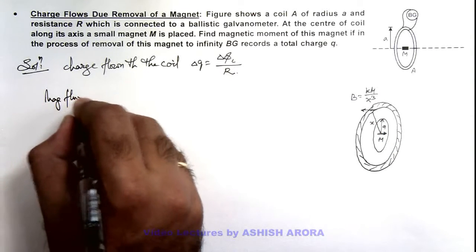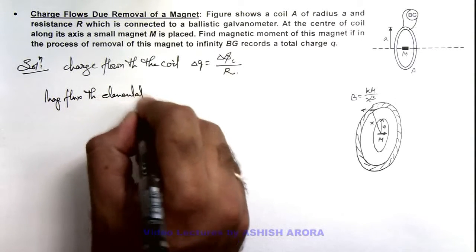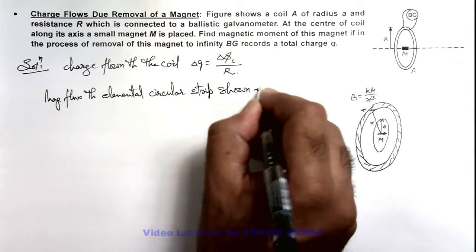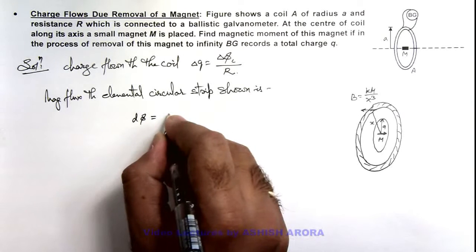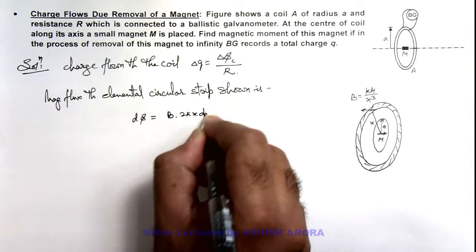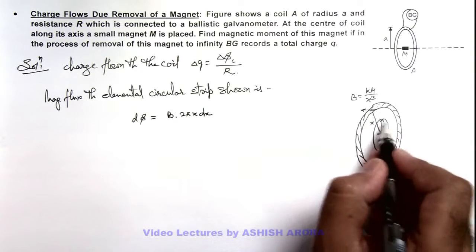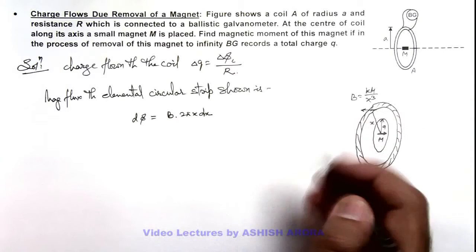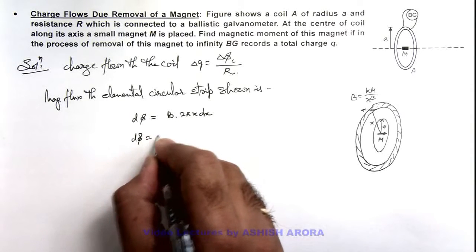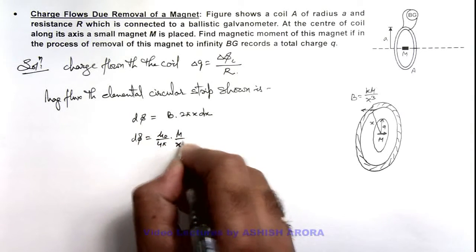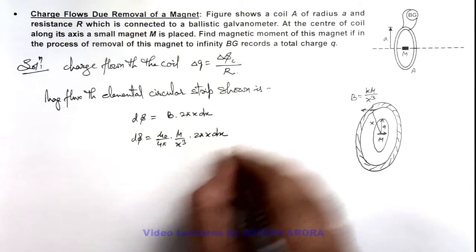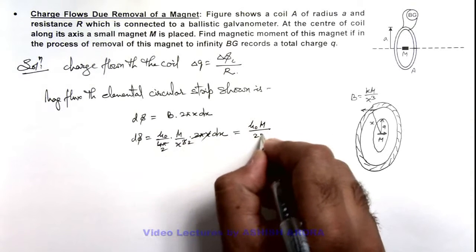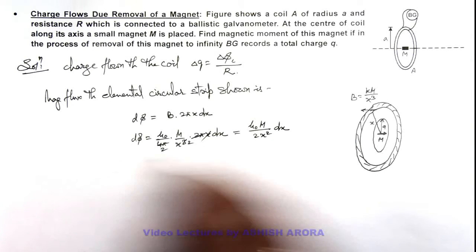In this situation we can calculate the magnetic flux through the elemental circular strip. This magnetic flux dφ can be written as B · 2πx dx. If the coil is having n turns, then we multiply by n. So dφ equals (μ₀/4π) · (m/x³) · 2πx dx. The 2π cancels and one x cancels, giving dφ = μ₀m / (2x²) dx.